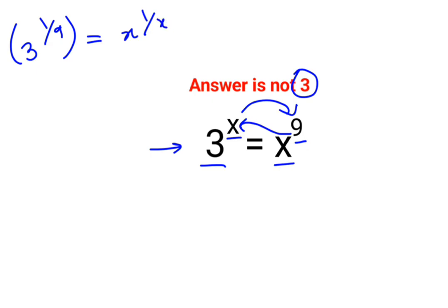Now at this point, you need to try and make your constant look like this form: A raised to 1 by A. If that is the case, then from here we can say the value of X is nothing but A.